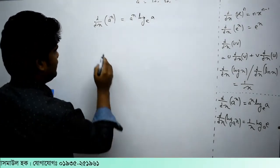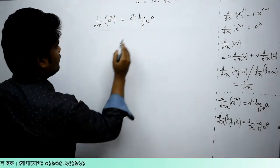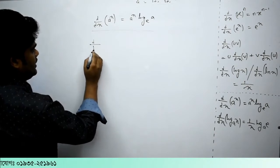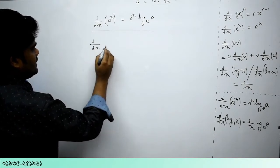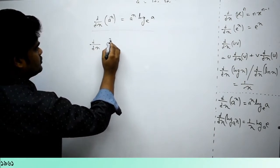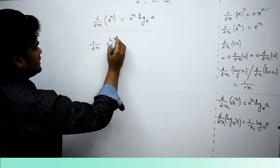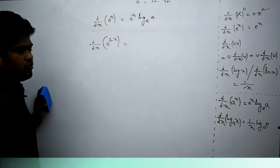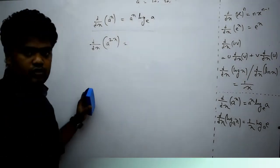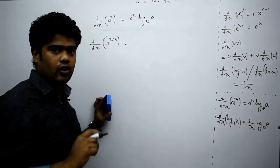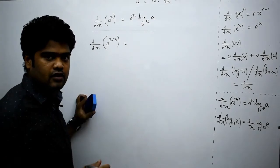At this point, D by dA of A to the power 2x is the derivative by 2x. I will show you the data by that.